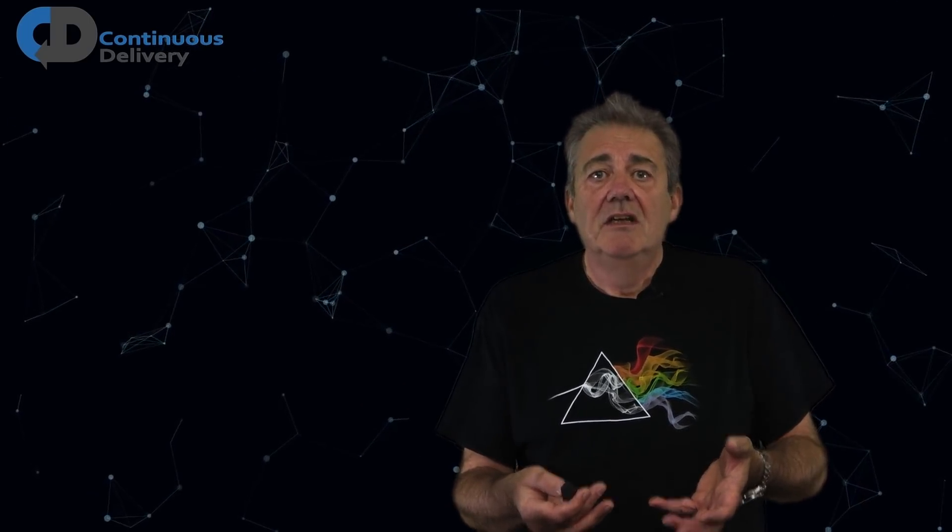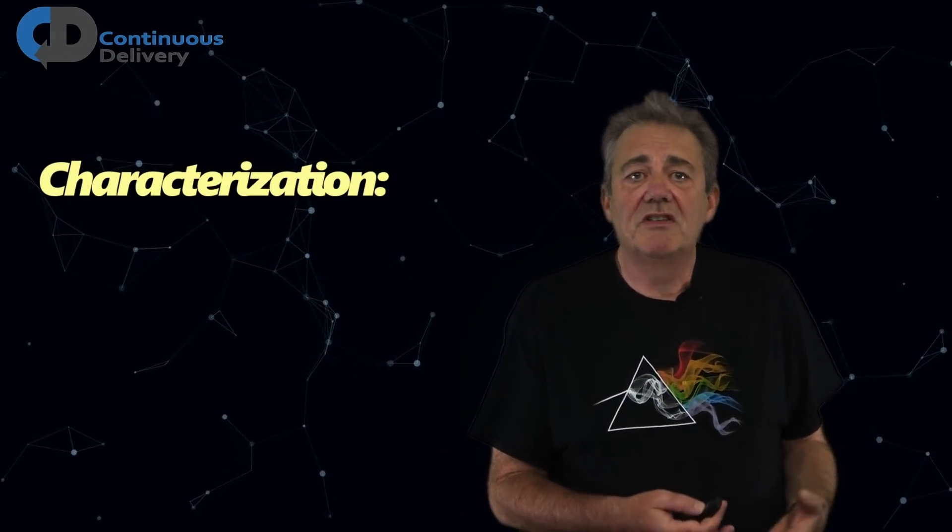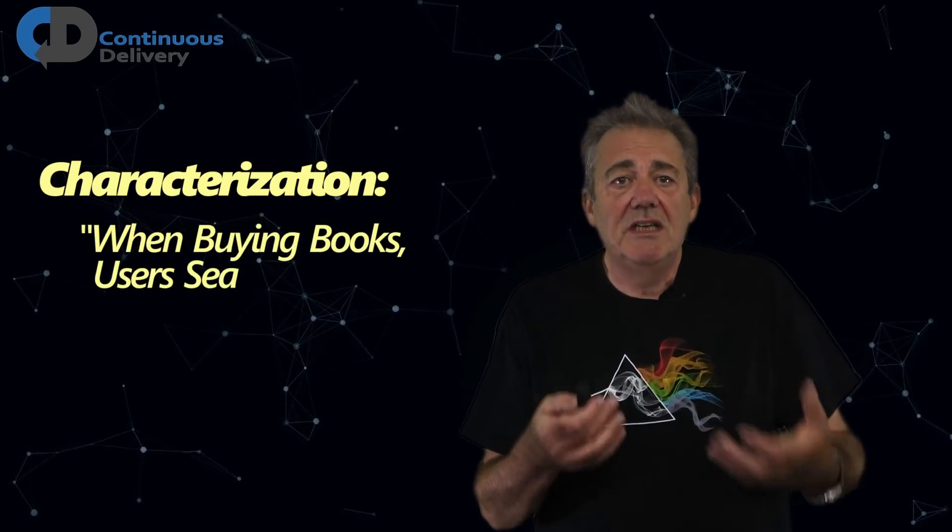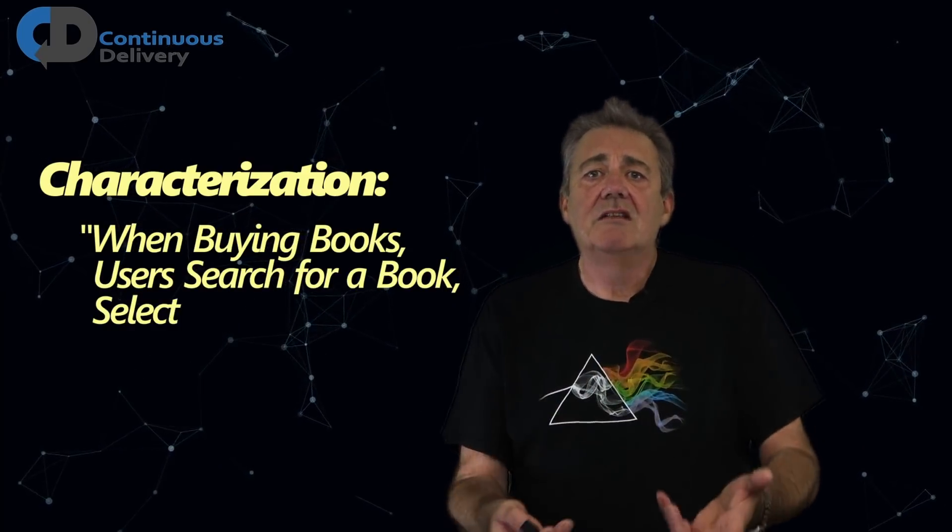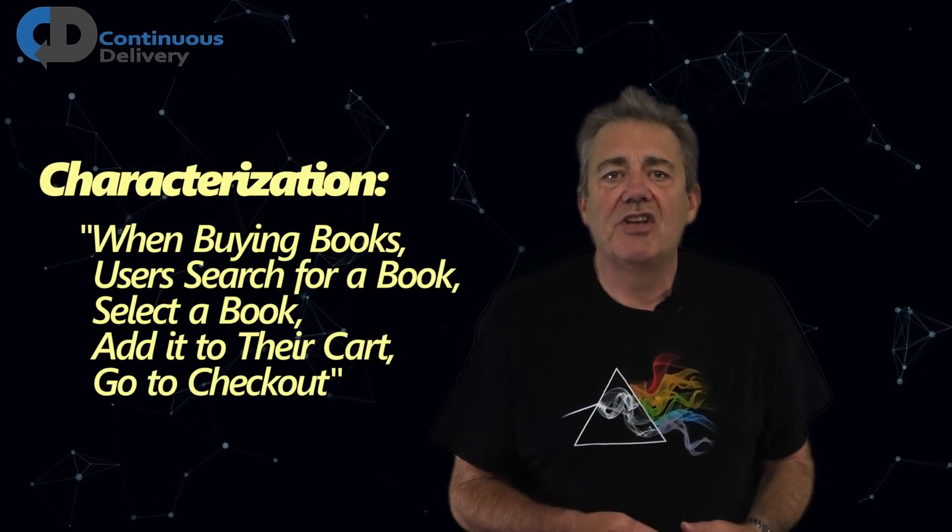If this is an experiment, what's my characterization? What's my hypothesis? What's the theory that I want to test? And how will I control the variables in my experiment so that I can understand the results? The characterization is our understanding of the current situation. Here's an example. Currently, when buying books, our users need to search for a book, select a book from a list of matches and add it to the shopping cart and then go to the checkout.